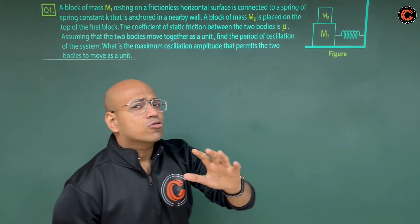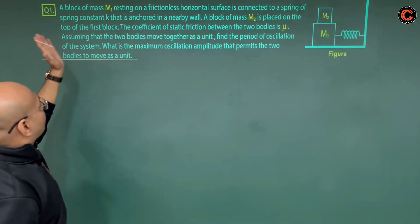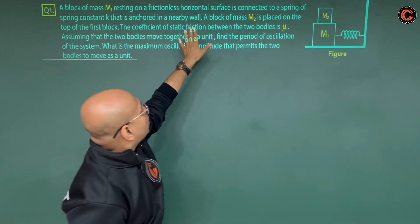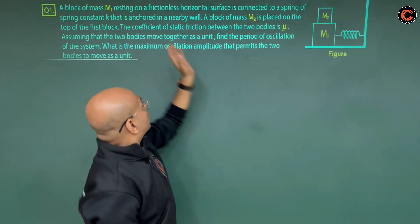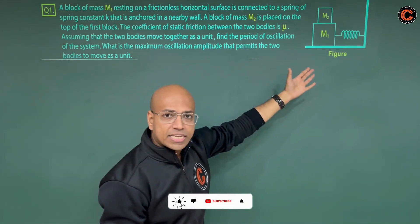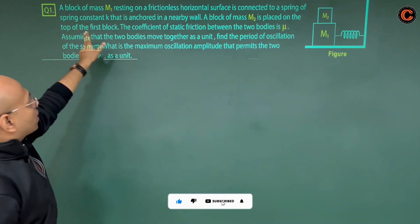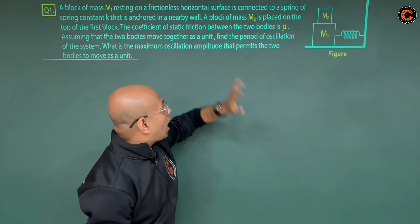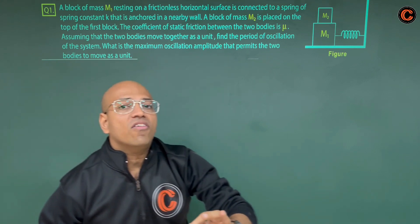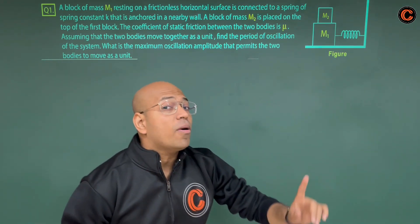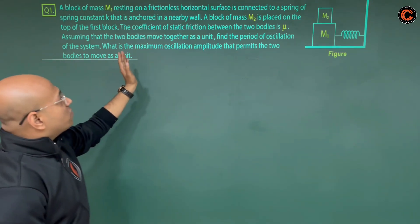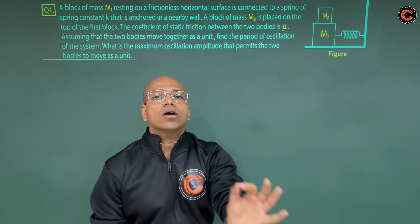Our question: a block of mass M1 is resting on a frictionless horizontal surface. It is connected to a spring. A block of mass M2 is placed on the top of the first block. Find the coefficient of static friction between the two blocks — it is mu.